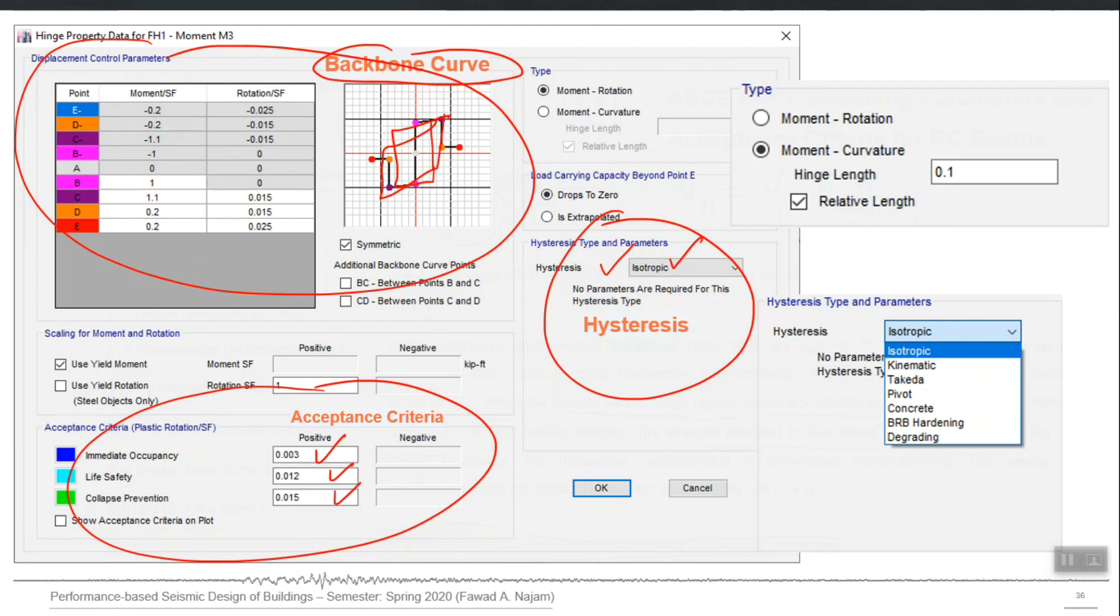For reinforced concrete elements, a different unloading and reloading rule is applicable. For steel elements, different is applicable.